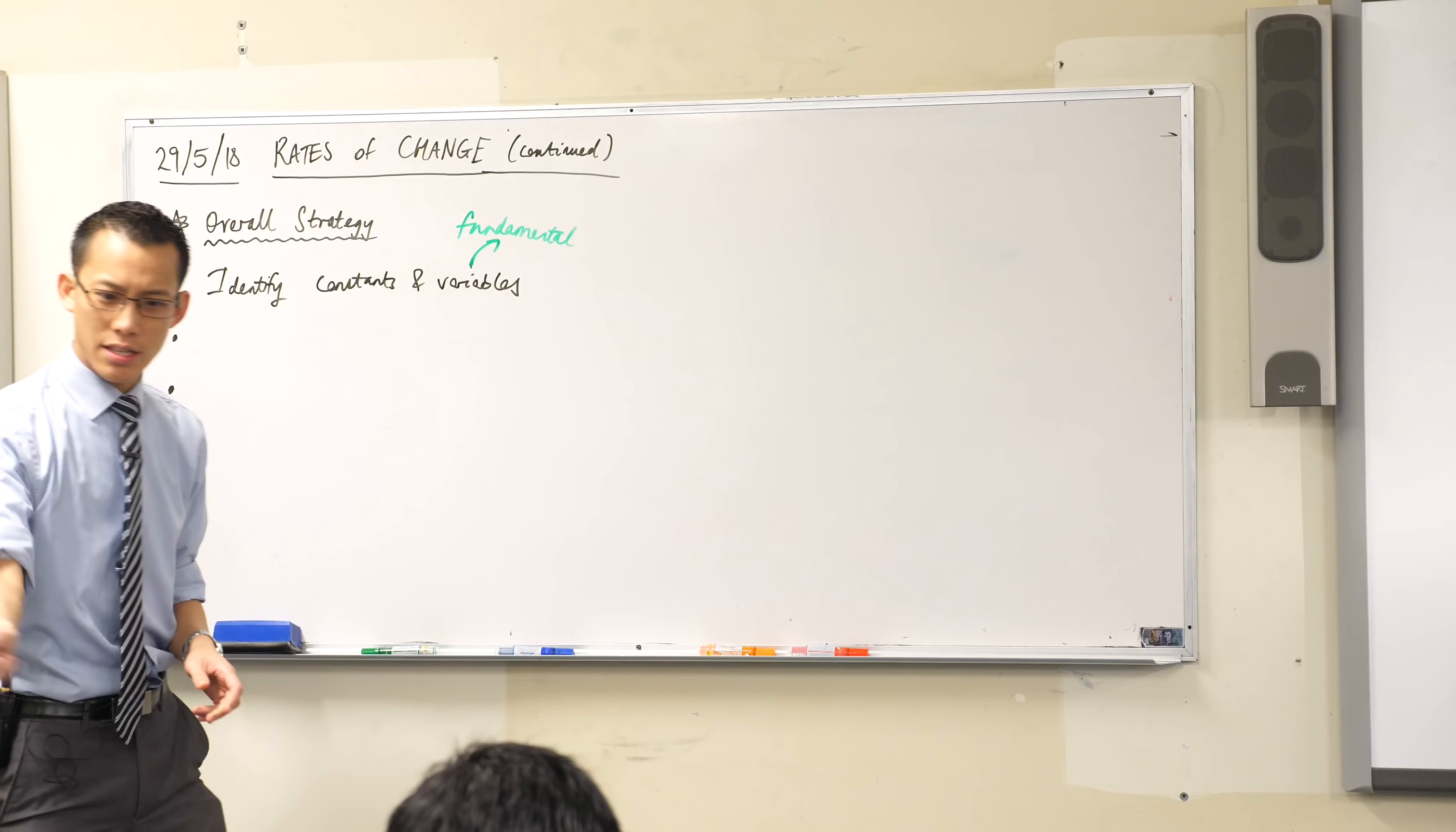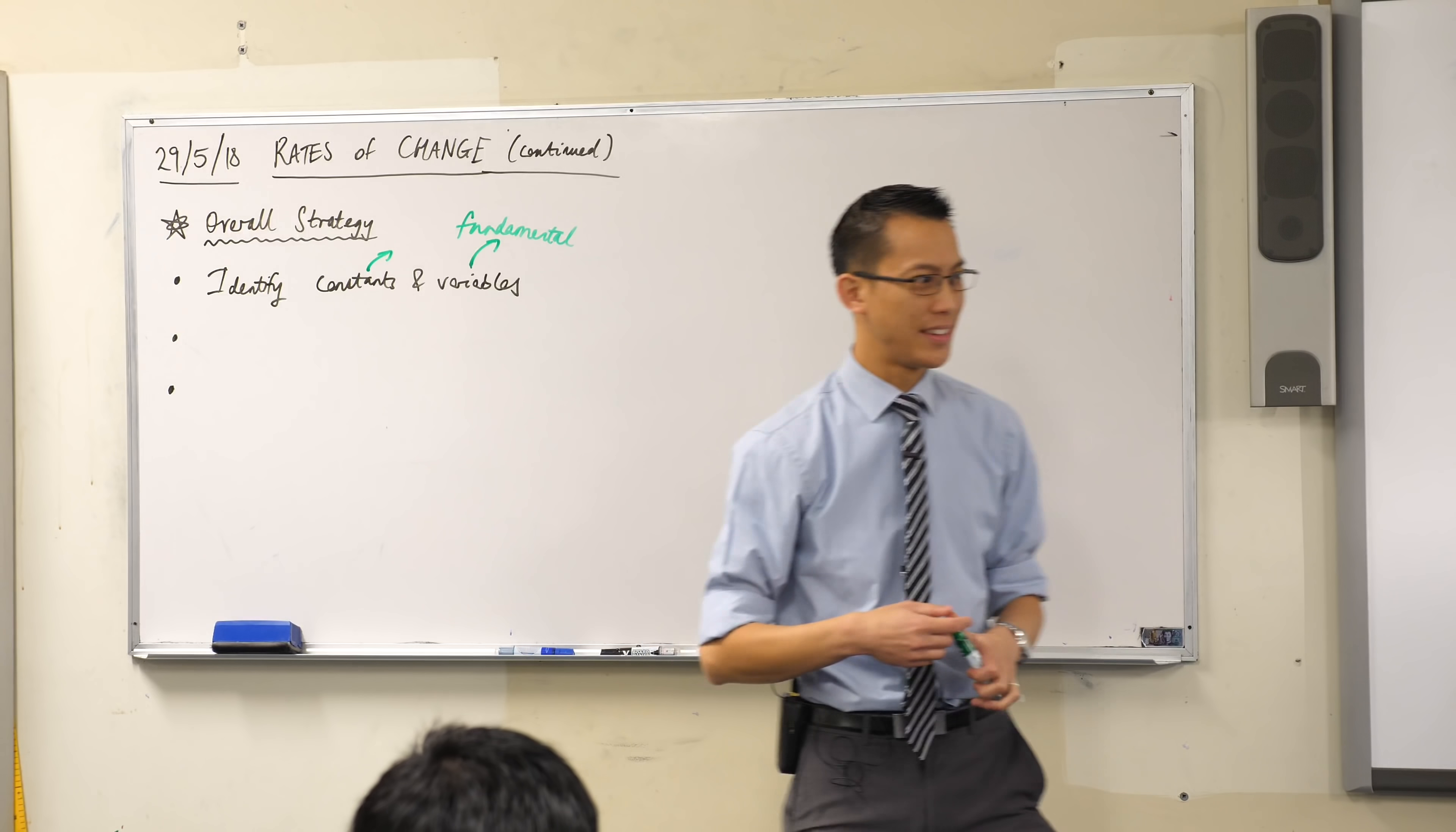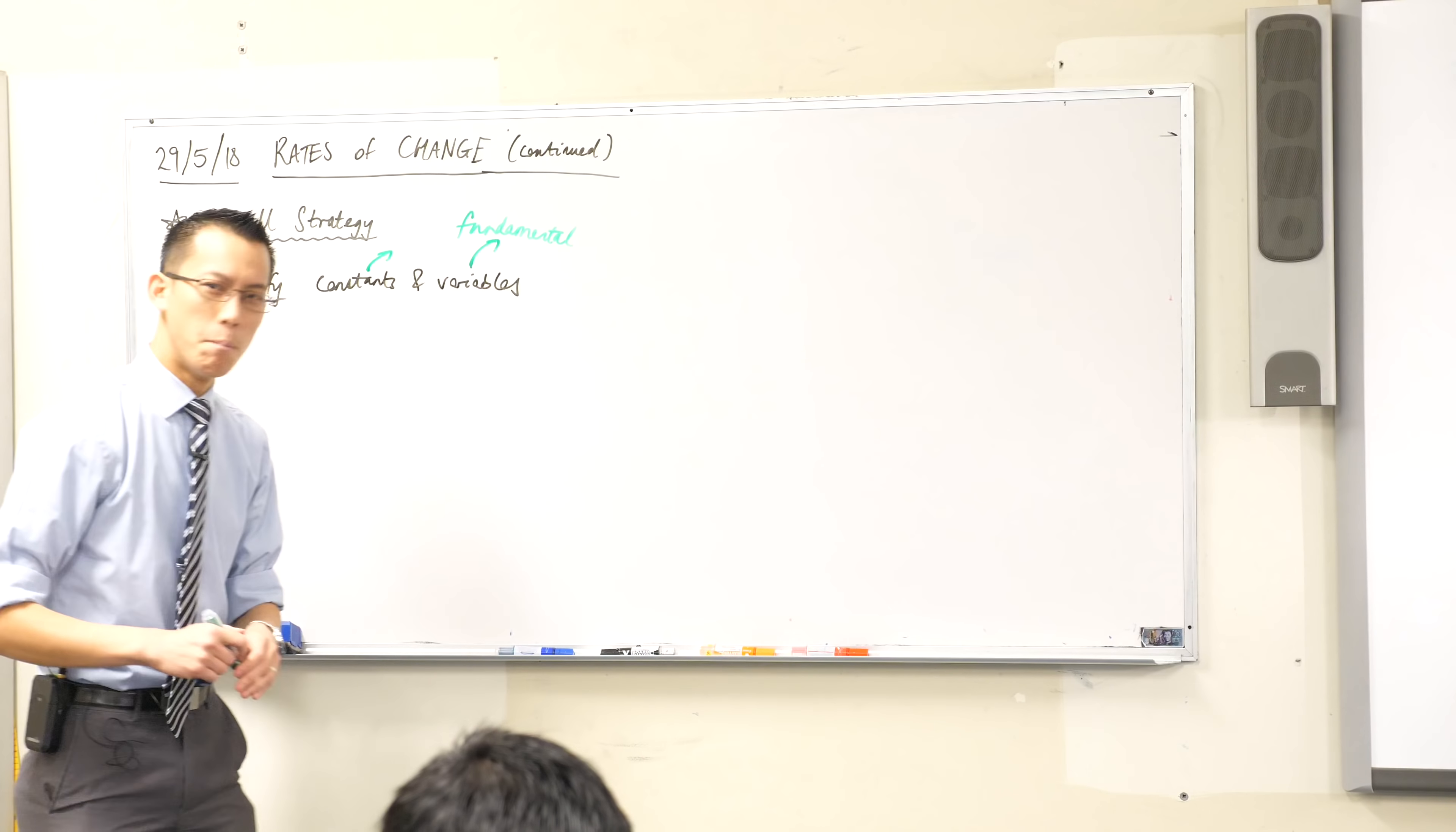When we think about constants, some of the questions you've been having a look at, for example, there might be a cylinder and it might have a constant radius, but its height can change or something like that, okay? So some values in there, they don't change and you need to know what they are. What was the most important constant that you tended to find in the questions we were having a look at?